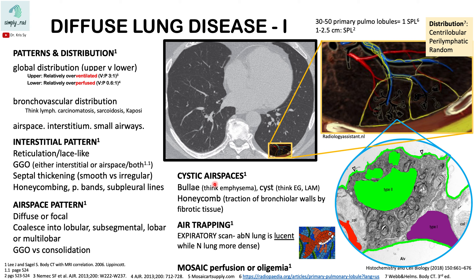In the background of emphysematous lung, where there is destruction of the alveoli, you may develop bullae — lucencies greater than one centimeter. Comparing bullae to cysts: a bulla will not have a complete margin and will not be well-marginated, unlike a cyst, which is completely marginated.